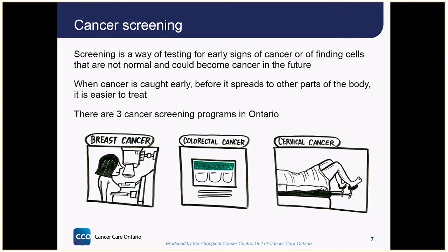Screening is a way of testing for early signs of cancer or finding cells that are not normal and could become cancer in the future. When cancer is caught early, before it spreads to other parts of the body, it's easier to treat. There are screening programs in Ontario for breast, colorectal, and cervical cancer. Breast screening is done with a type of x-ray called a mammogram, which checks for breast lumps. Colorectal screening is done with a home test that checks for signs of blood in the stool. Cervical screening is done with a pap test, which checks for early signs of cervical cancer or cell changes that could become cancer in the future if they aren't treated.